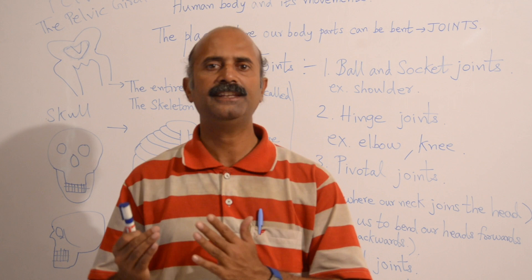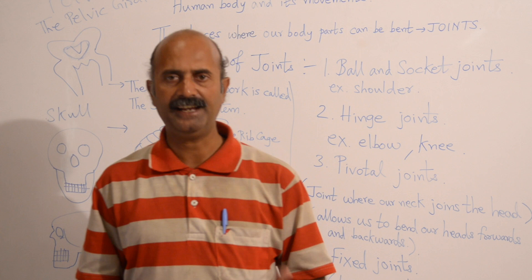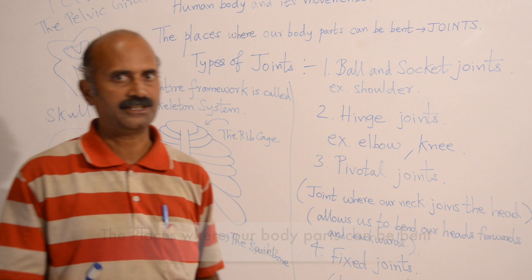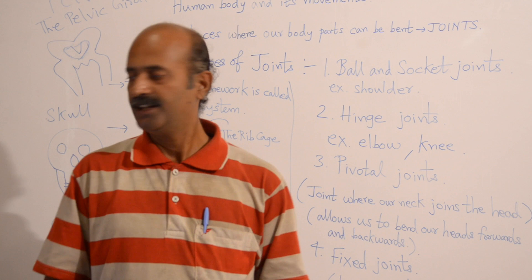The places where our body parts can be bent are called joints. Now we are going to study about the types of joints in detail. First, we are going to study about the ball and socket joint.